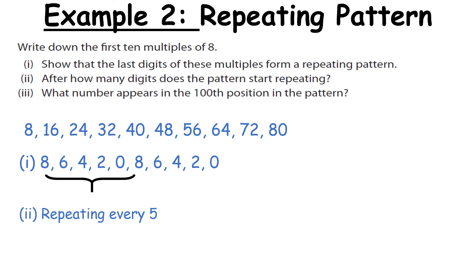Then the final part is what number appears in the hundredth position of the pattern. Now because we aren't dealing with the repeating pattern at the very start, we're dealing with the linear sequence or pattern. If you notice the formula is going to be the first term is eight, the second term is sixteen. So actually where it sits, its position, its term number multiplied by eight will give me the answer. So the tenth term is ten by eight which is eighty. So my hundredth term is going to be eight by a hundred, which is simply eight hundred.